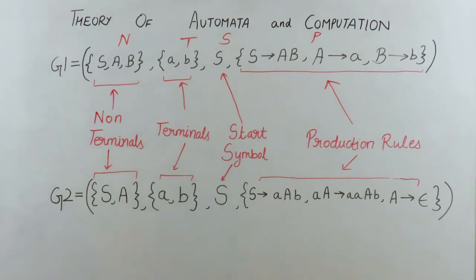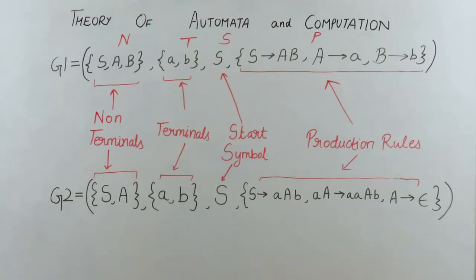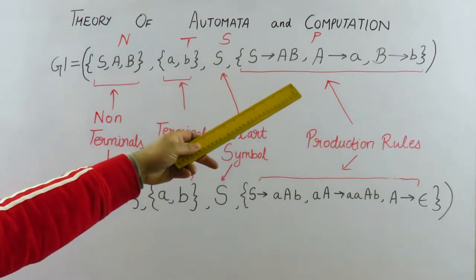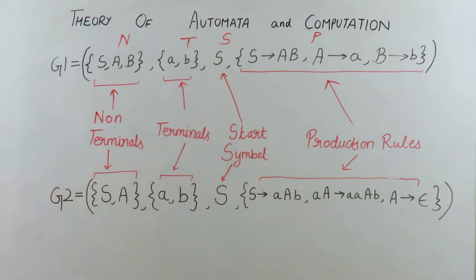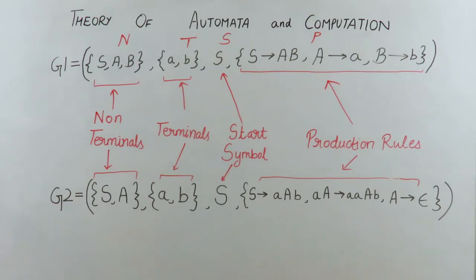Every production rule is of the form alpha derives beta. Note that alpha category strings must have at least one non-terminal symbol. In these examples, S, A, and B are all non-terminals appearing on the left-hand side. So at least one symbol should be a non-terminal in the alpha string. There can be as many symbols in alpha, but at least one must be a non-terminal.